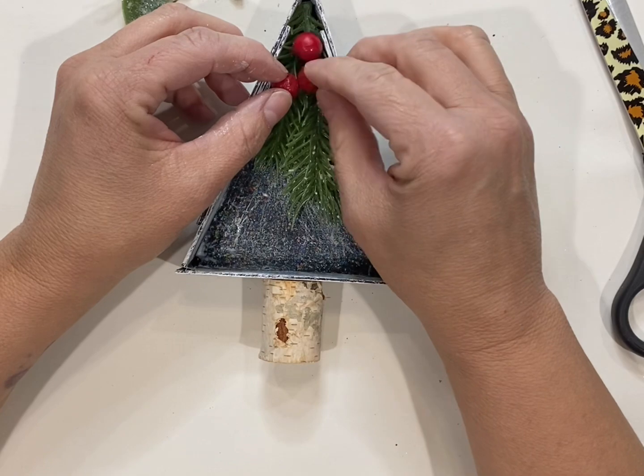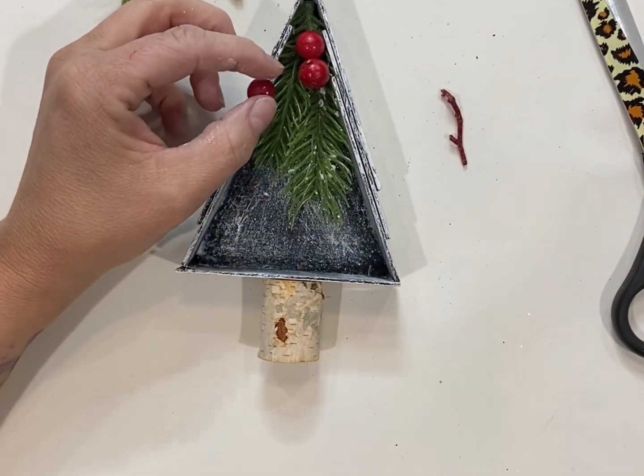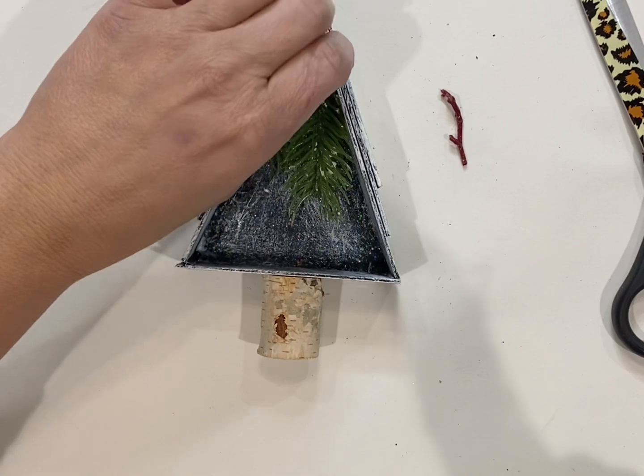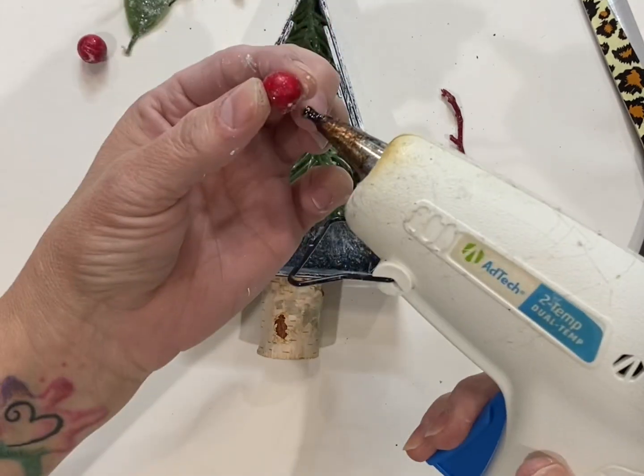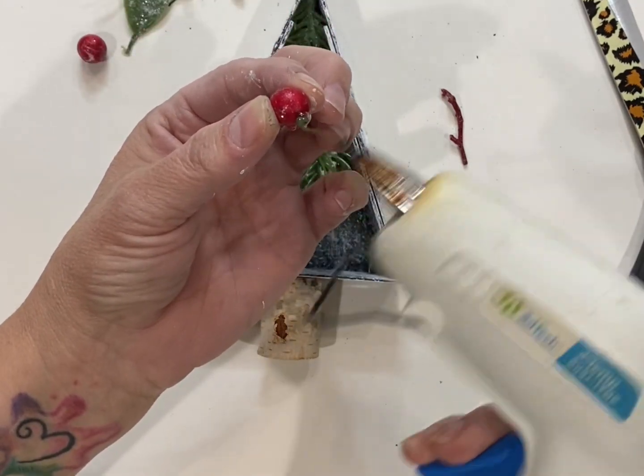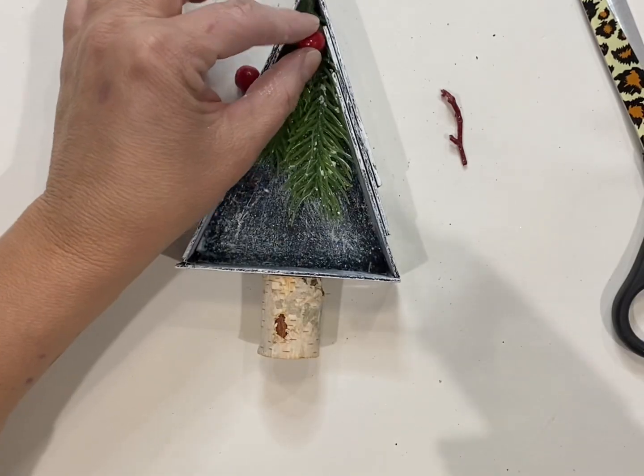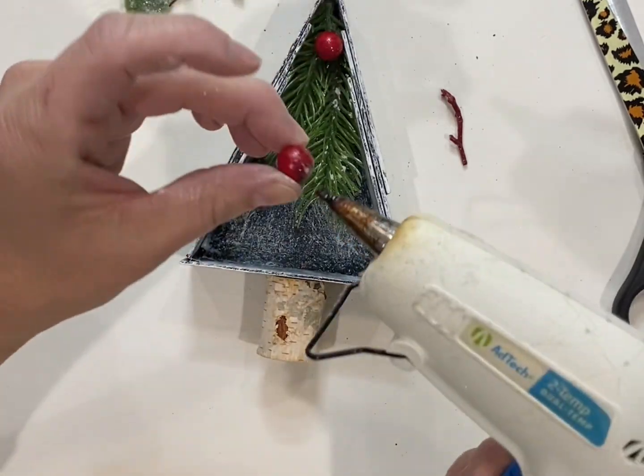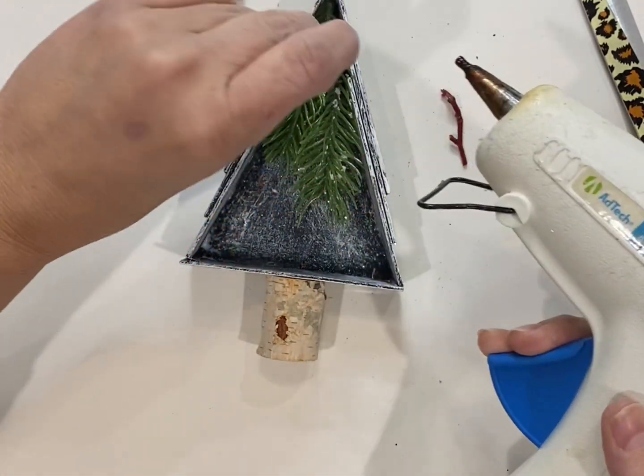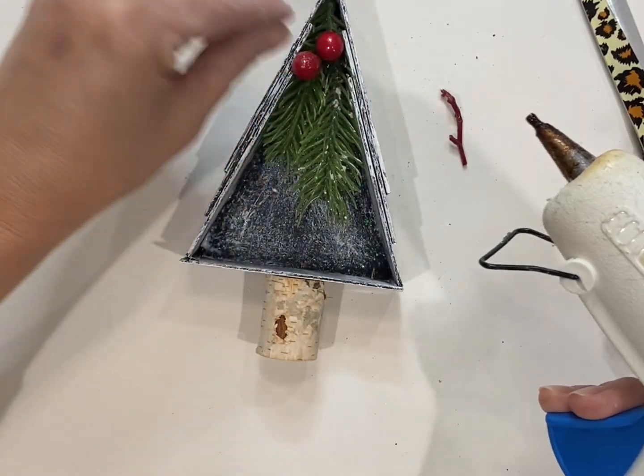Just kind of get them placed where I want them. I'm gonna hot glue them down. These little red berries are all the time falling off projects, so just save them and put them in a little container. Use them for something like this. All right, got that part done.